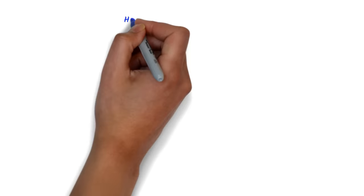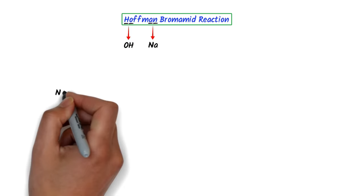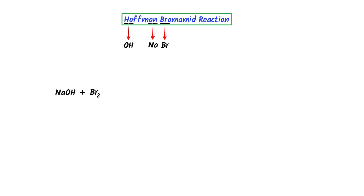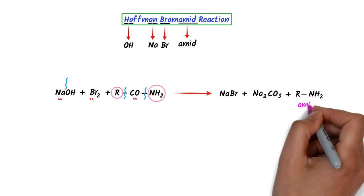Now let me teach you the Hoffmann bromamide reaction. I select Na and OH in 'Hoffman' — sodium hydroxide. I select 'brom' from bromamide — bromine. I select 'amide' from bromamide — amide is R-CO-NH2. I break sodium and hydroxide, and break R-CO and NH2. Sodium attacks Br and CO to give sodium bromide plus sodium carbonate. R-NH2 combines to form amine. This is the Hoffmann bromamide reaction.